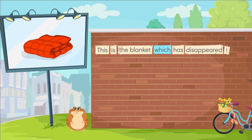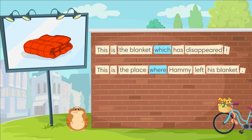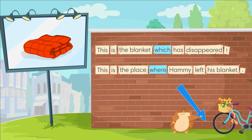This is the blanket which has disappeared. This is the place where Hammy left his blanket.